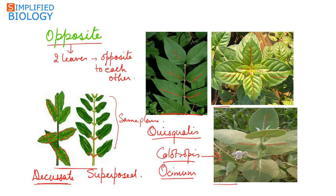In summary: opposite superposed means two leaves arise at a node while the leaves developing above lie in the same plane — example is Quisqualis. In opposite decussate, two leaves arise at a node and the leaves developing above lie at right angles to the ones below — examples are Calotropis and Ocimum.